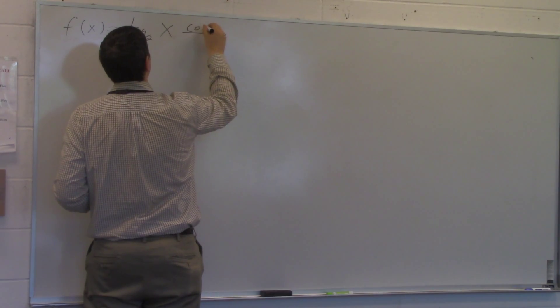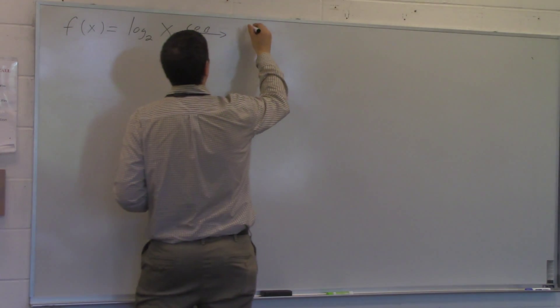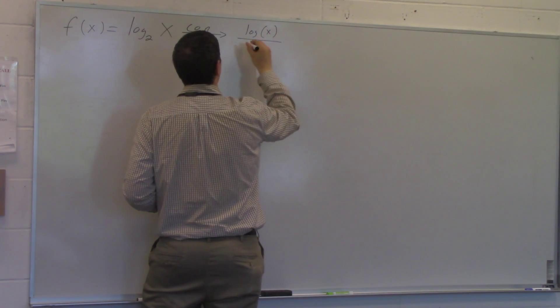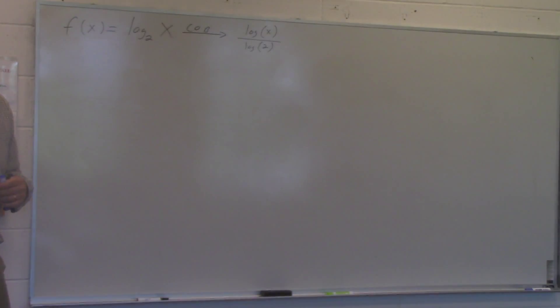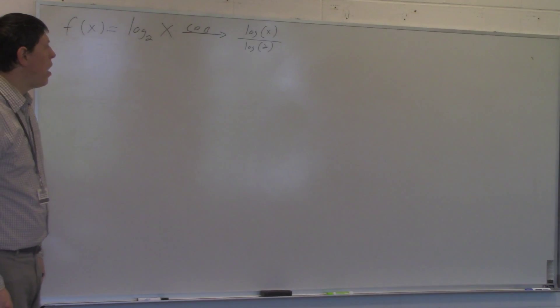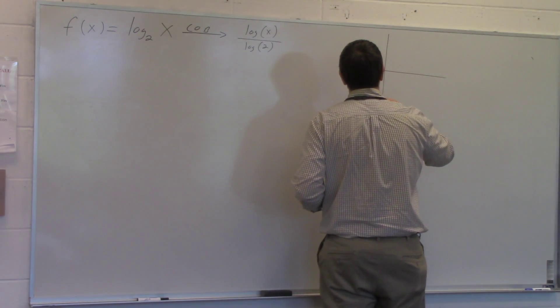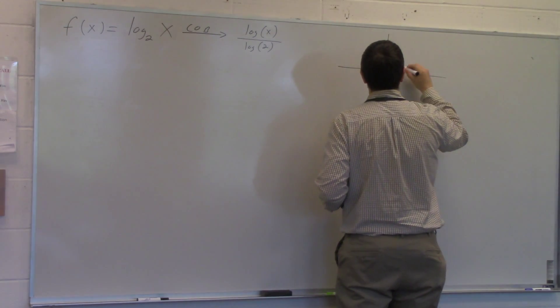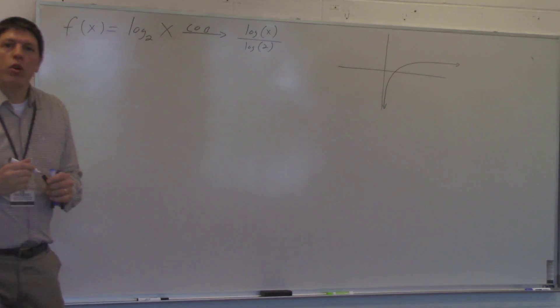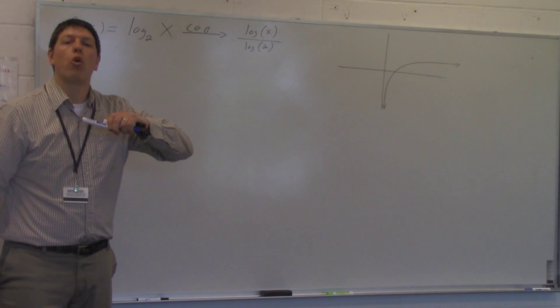There are two ways to do it — by hand and by calculator. Using the change of base formula, that becomes log(x) / log(2). In your graphing calculator, hit your Y= button and enter log(x) divided by log(2), just like we did before. You should get a function that looks roughly like a curve increasing slowly to the right.